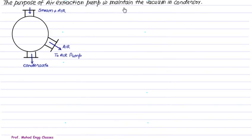The purpose of air extraction pump is to maintain the vacuum in the condenser. We have the spherical shell here which represents the condenser. This is the inlet of the steam turbine, this is the condenser. Water inlet and water outlet will be on this side, and through this side we have an air pump. This side goes to hot well, this side is coming from the turbine.